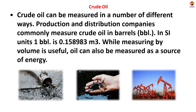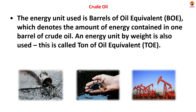Crude oil can be measured in a number of different ways. Crude oil production and distribution companies commonly measure crude oil in barrels (BBL). In SI units, 1 BBL is 0.15893 cubic meters. While measuring by volume is useful, oil can also be measured as a source of energy. The energy unit used is barrels of oil equivalent, which denotes the amount of energy contained in one barrel of crude oil. An energy unit by weight is also used, called ton of oil equivalent.